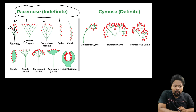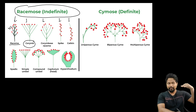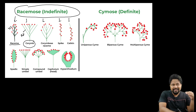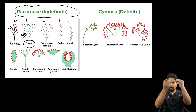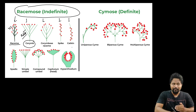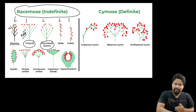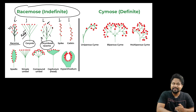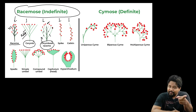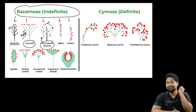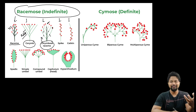Next is corymb. In corymb, the flowers are pedicellate and the pedicels vary in length — older flowers have longer pedicels and younger flowers have shorter pedicels — so that all flowers come to the same level. This is corymb, also called corimbose raceme. The peduncle is the main axis and the pedicel is the stalk of individual flower.